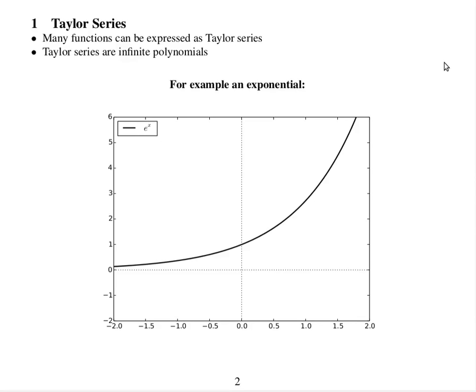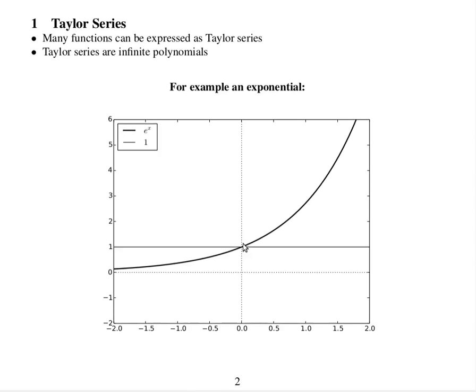For example, this here is an exponential function. We're going to find the Taylor series that approximates this exponential close to x equals 0. We'll start off by putting in 1, which is very close to x equals 0.